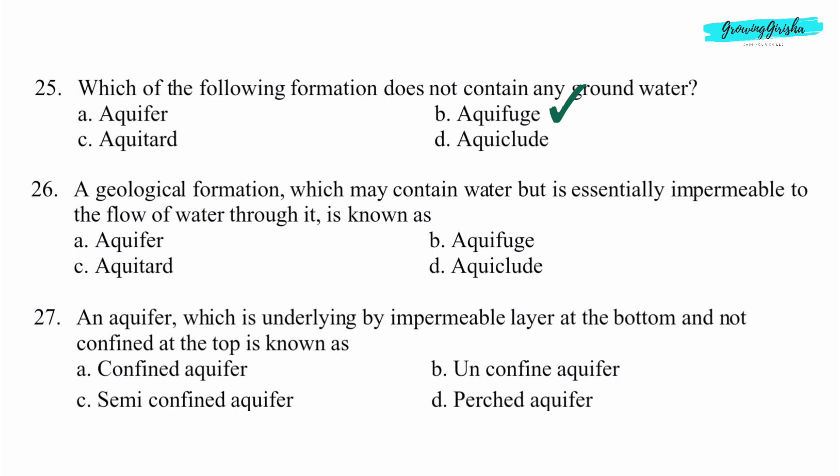Question 26. A geological formation which may contain water but is essentially impermeable to the flow of water through it is known as? Option D: Aquiclude.